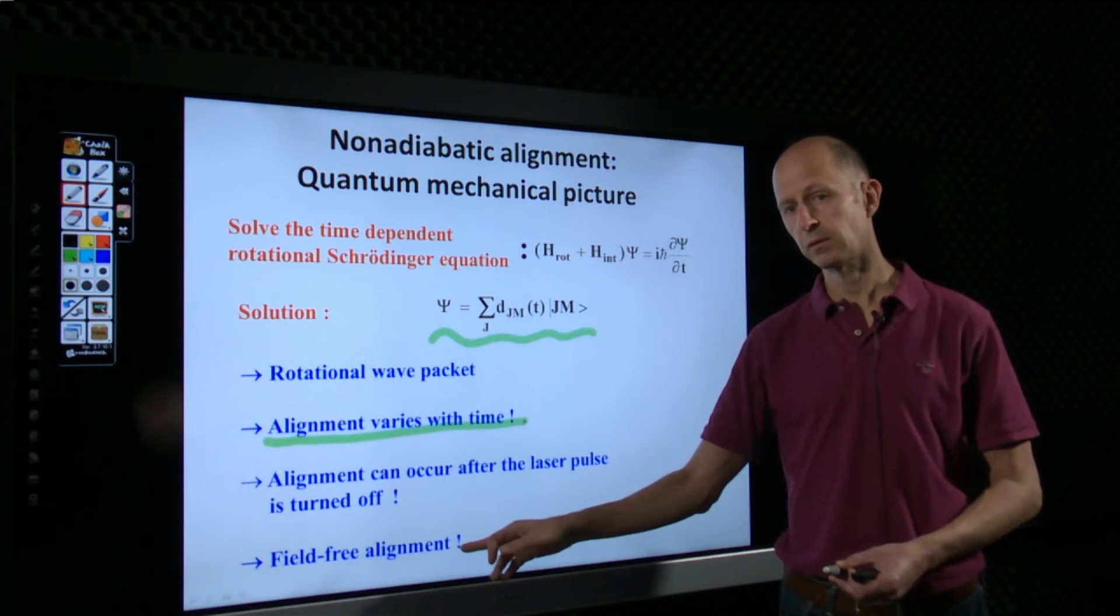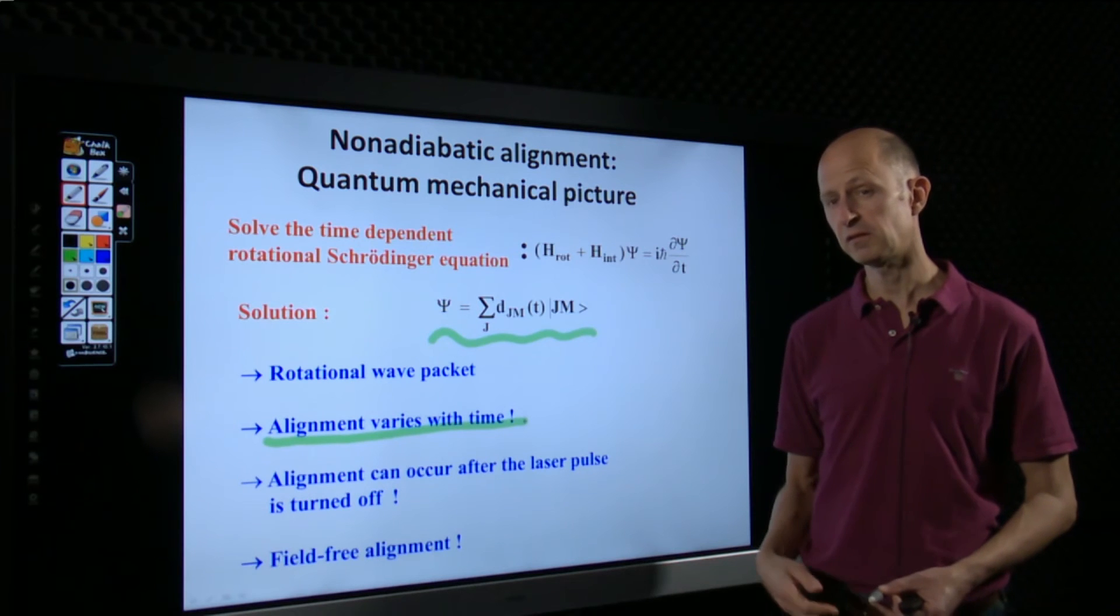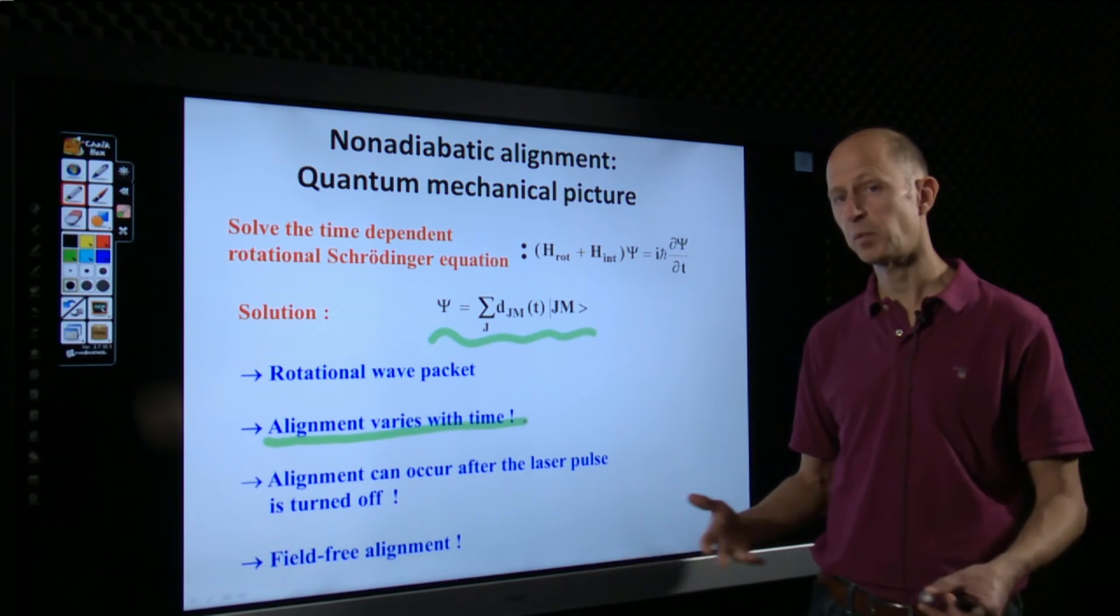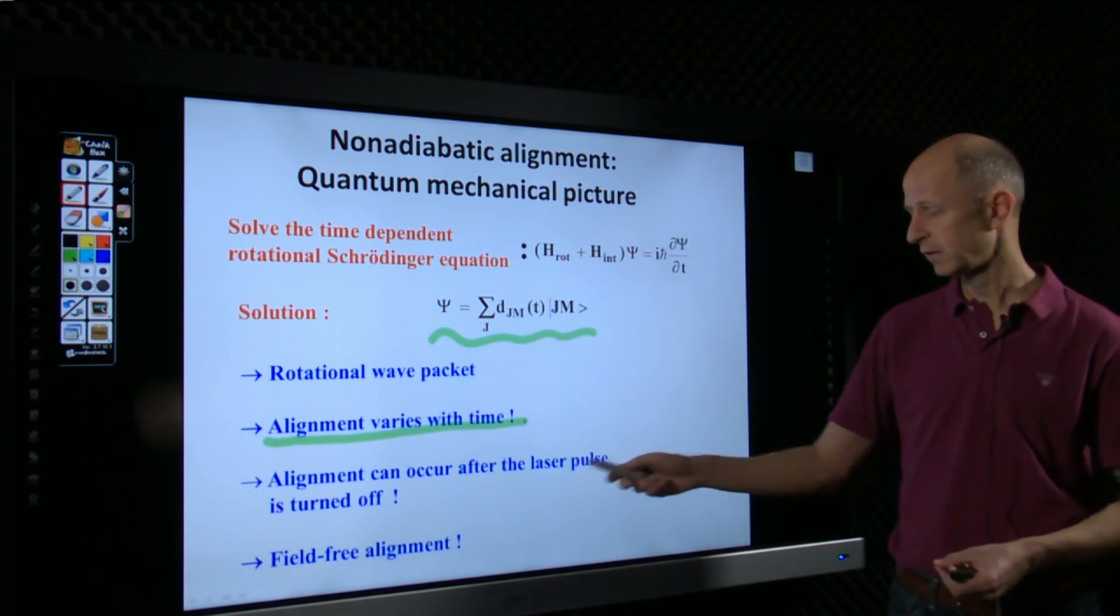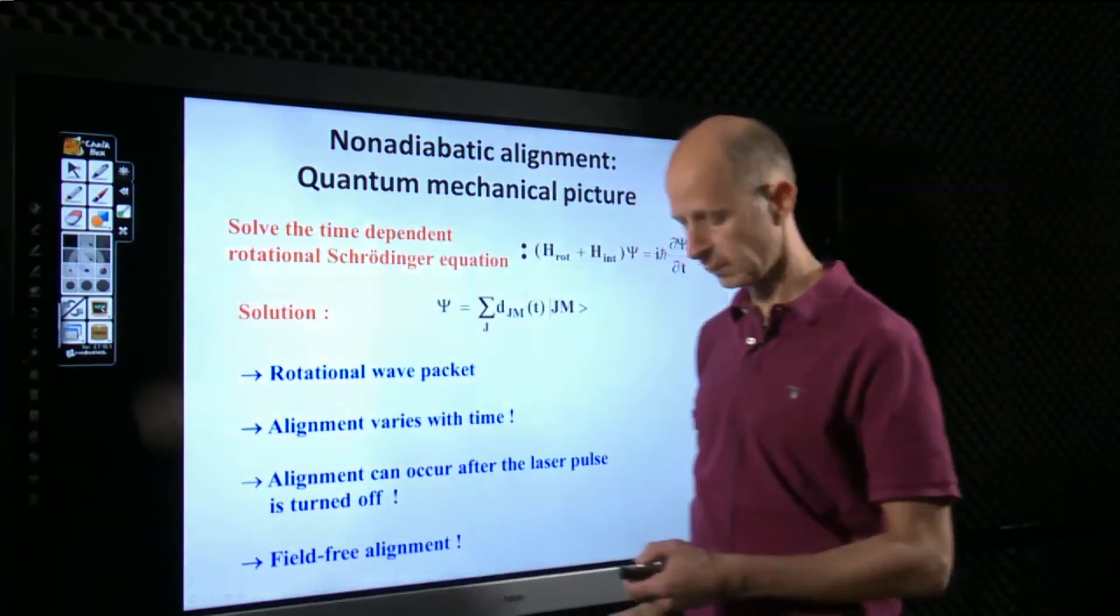And as such, it can occur under field-free conditions, which is really useful for applications that may otherwise suffer from the presence of a strong alignment field. So that's an attractive situation to be in, and something that's used in this network as well.